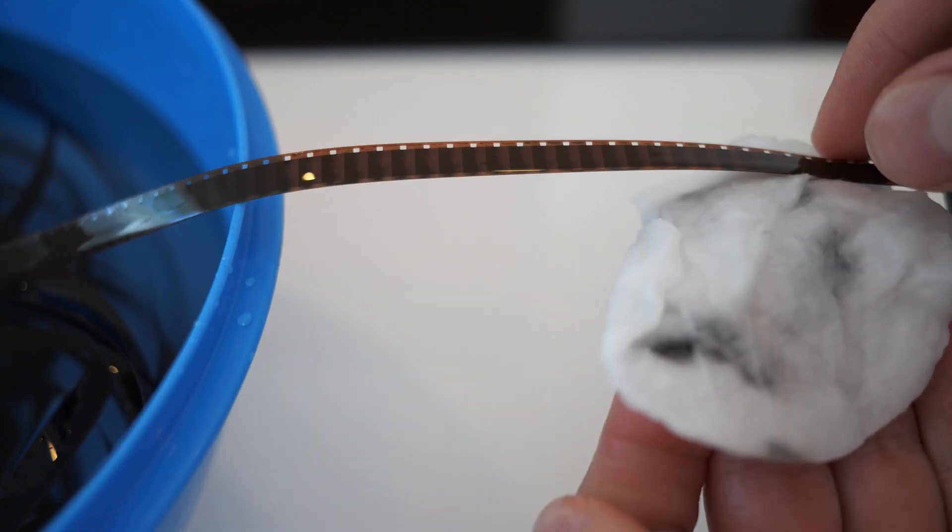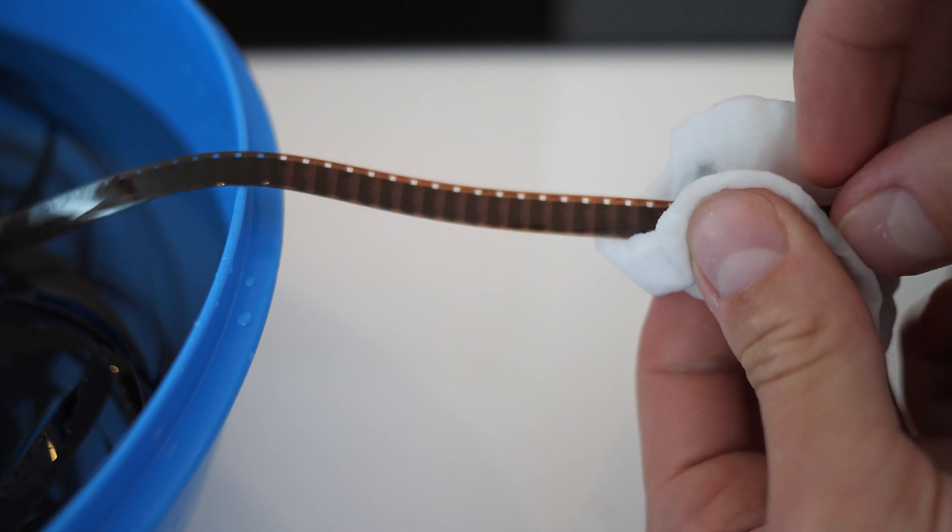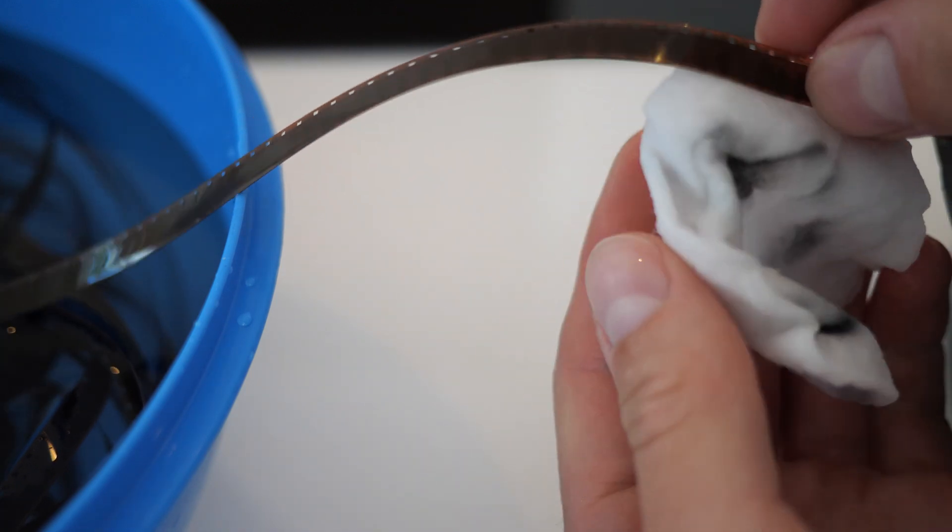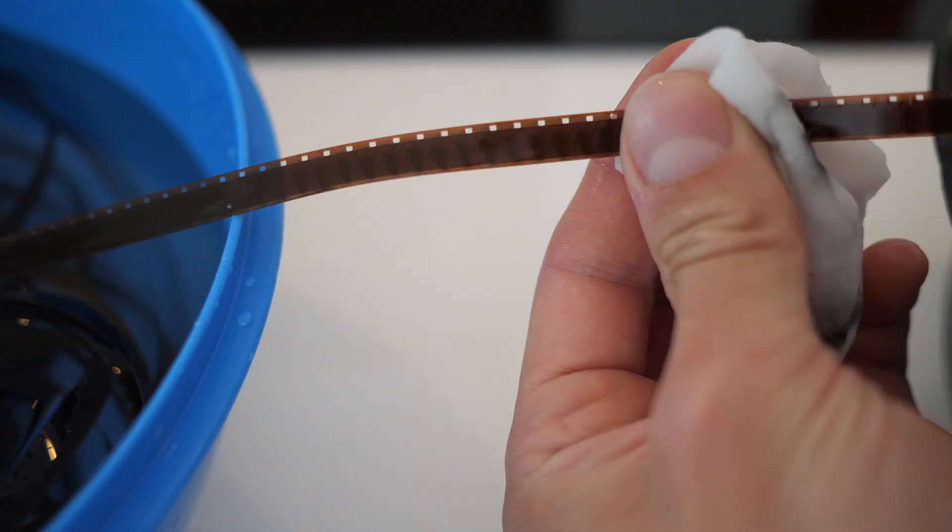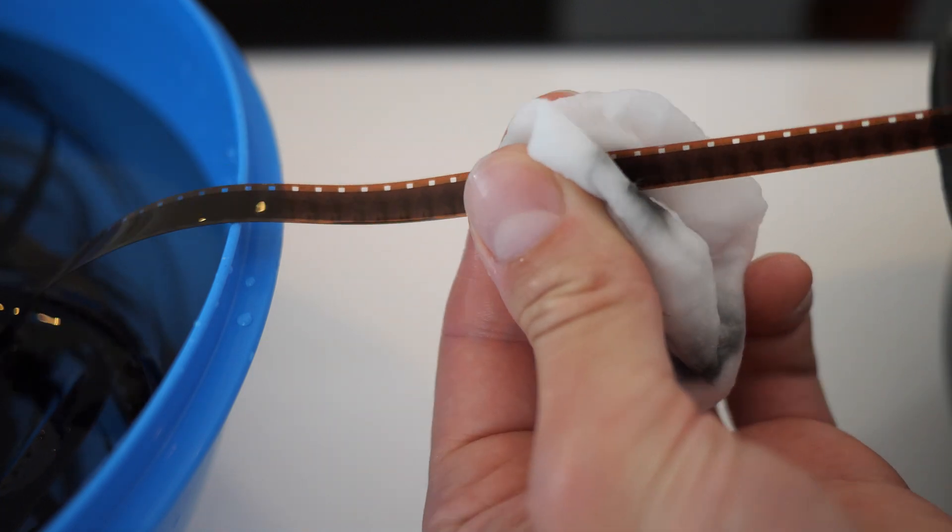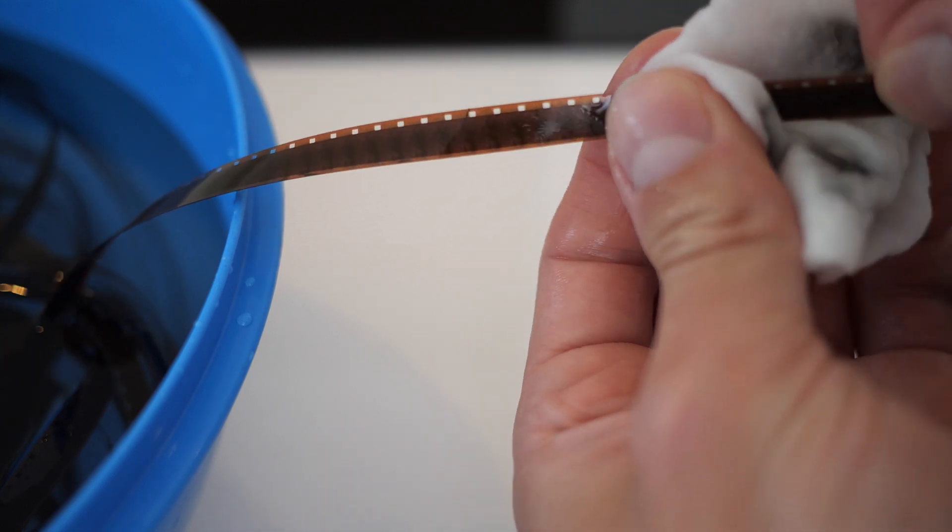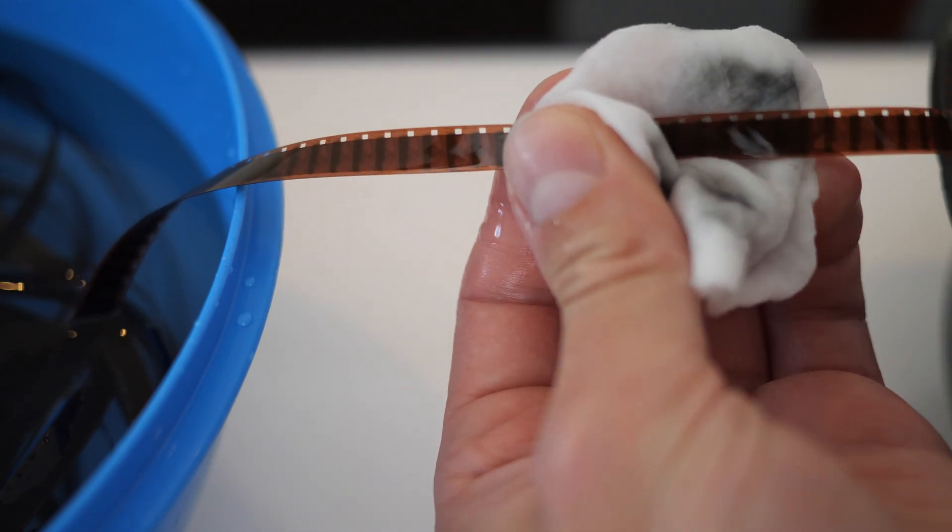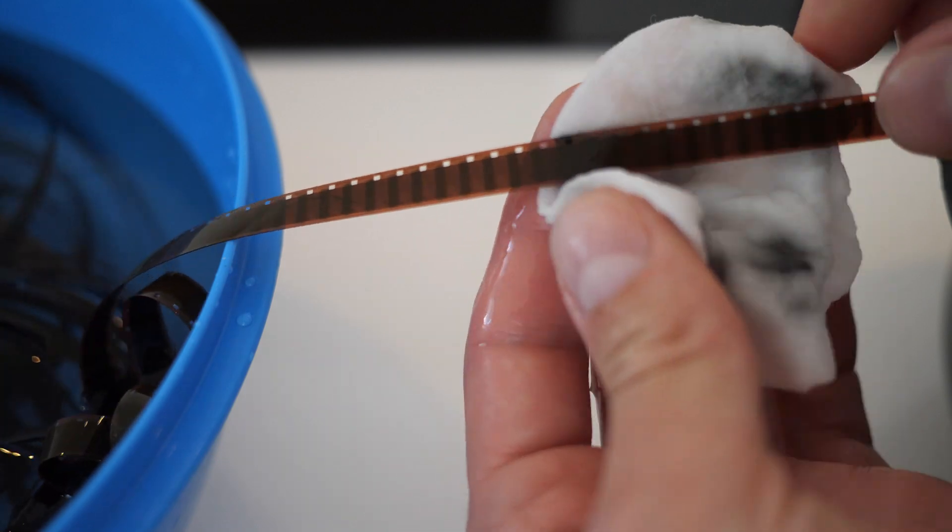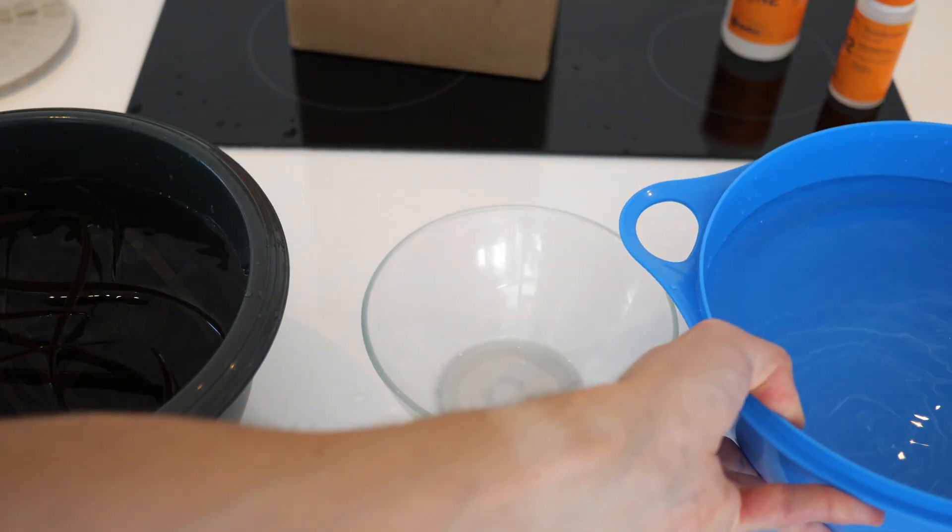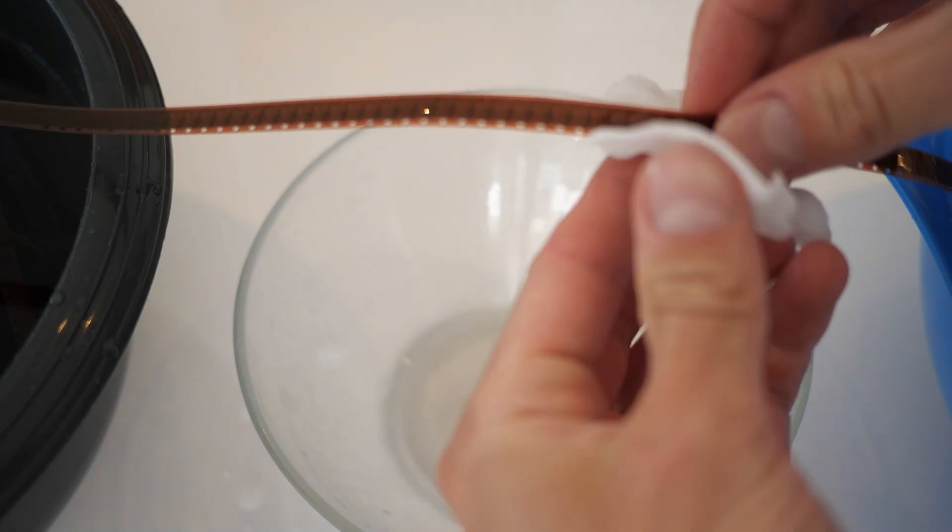Notice how the cotton immediately turns black from the ramjet. I recommend to change the spot on the cotton pad about every 50 cm. Also, make sure to wash out the pad under running water from time to time. Once we pull the whole film through the pad, we exchange the bowls and start the process again, this time with a fresh cotton pad.